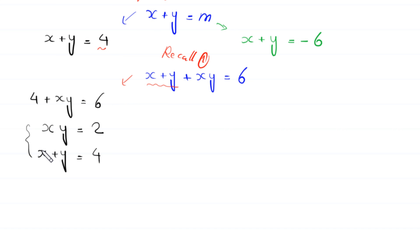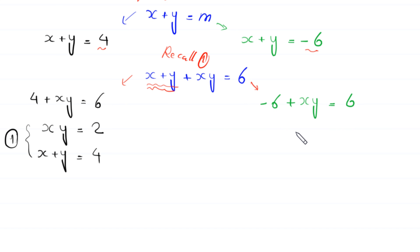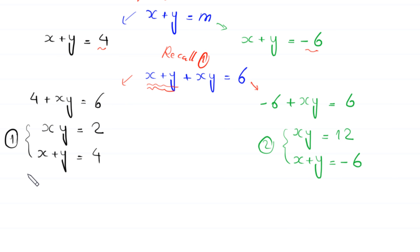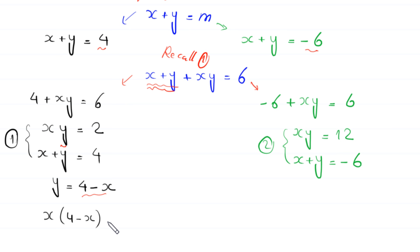Substituting x plus y equals negative 6 into equation 1 gives negative 6 plus xy equals 6, so xy equals 12. This is Case 2: x plus y equals negative 6 and xy equals 12. We now solve Case 1. From x plus y equals 4, we get y equals 4 minus x. Substituting into xy equals 2: x times (4 minus x) equals 2.